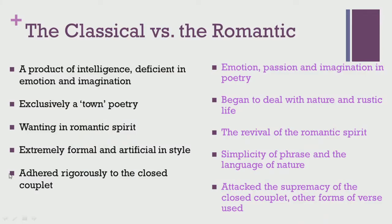Comparing romantic elements of the late 18th century with classical elements of the early 18th century is useful. Classical poetry was a product of intelligence, deficient in emotion and imagination. It was exclusively town poetry, not taking rustic life into consideration, lacking romantic spirit, dry and intellectual. In terms of writing style it was extremely formal and artificial, and in terms of form it strictly adhered to the closed couplet, which was more rigorous than the blank verse prevalent in the previous century.